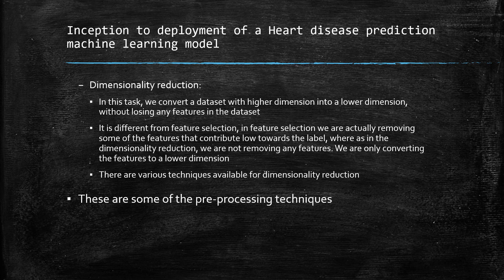To summarize, feature encoding, feature engineering, feature normalization, feature selection, and dimensionality reduction are some of the preprocessing techniques that we have to perform before we start training the model.